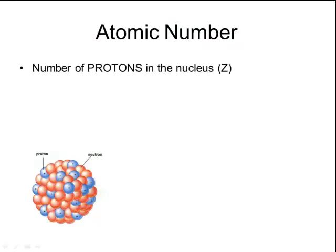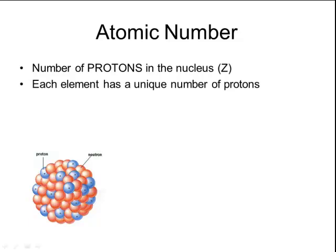One of those numbers is an atomic number. The atomic number is the number of protons that are in the nucleus. It is normally represented by the letter Z in symbols and calculations. Remember that every element has its own unique number of protons. For example, carbon has six protons, hydrogen has one proton, and oxygen has eight.